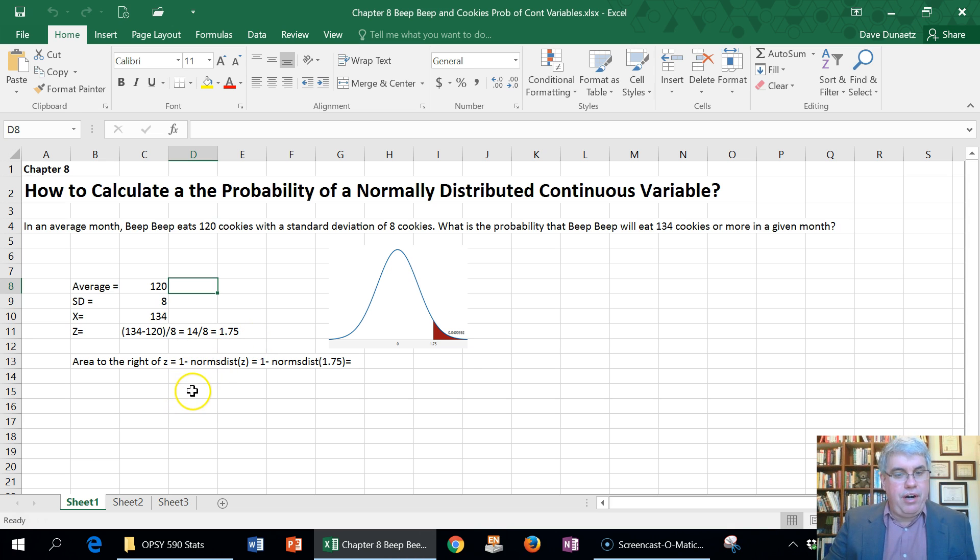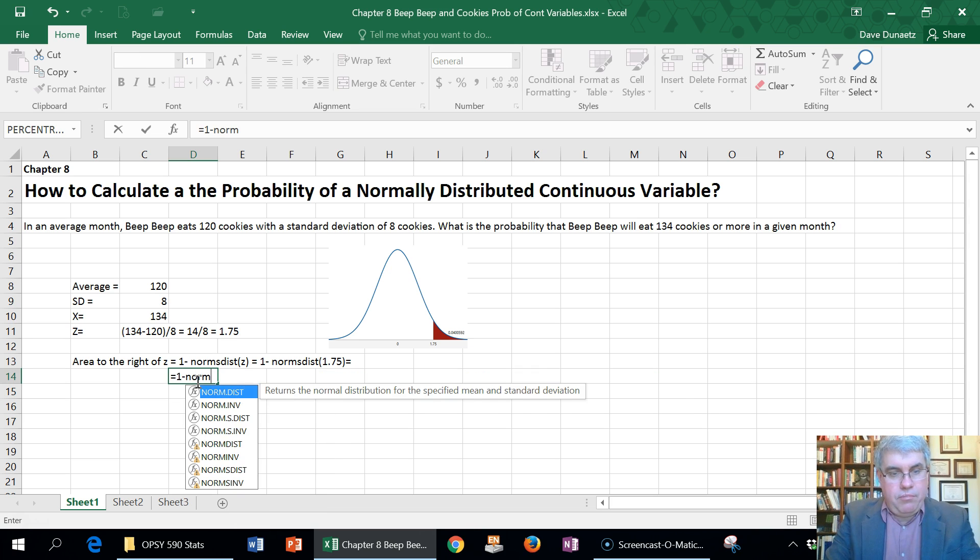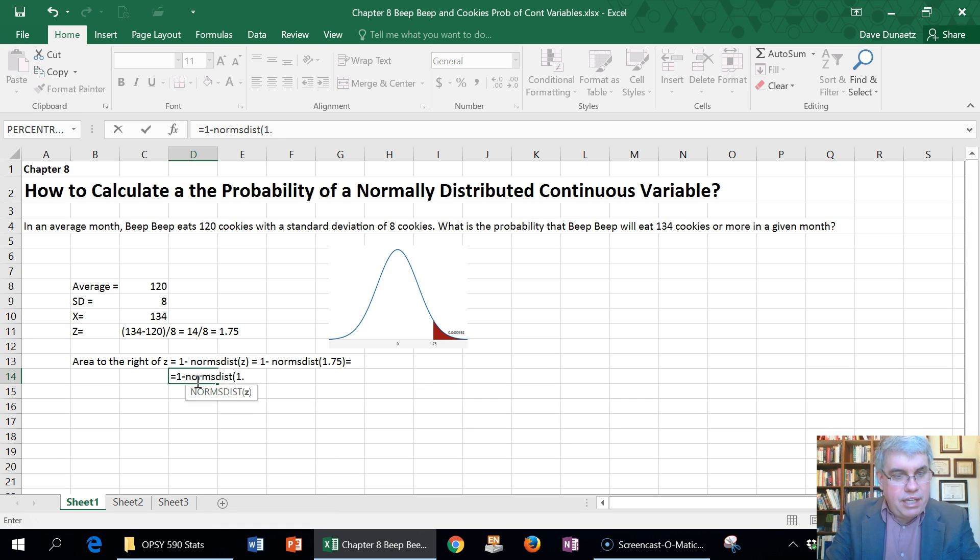Now, the area to the right of 1.75 here is going to be 1 minus the area to the left. And the area to the left is going to be the norm S dist. Remember when we calculated areas under the curve for Z scores. And so what we need to type into Excel is equal 1 minus norm S dist of 1.75. Now, I could make a link to, actually, there's no cell that has just 1.75. I didn't actually write that out. So I'll just type in 1.75 in parentheses.